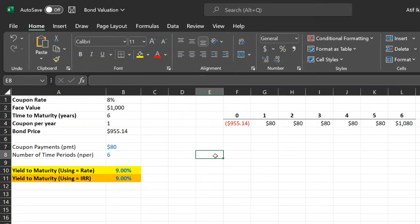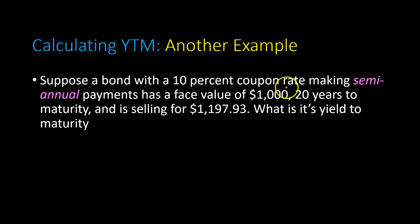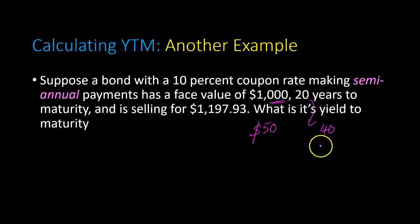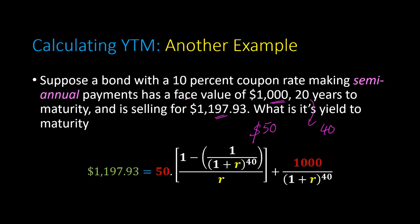Let's do this one more time for a bond that makes semi-annual coupon payments. Suppose a bond pays a 10% coupon rate semi-annually with a face value of $1,000 — meaning each six months you get $50. With 20 years to maturity, that means 40 six-month periods. The bond is selling for more than $1,000, meaning it's selling at a premium, so the yield to maturity will be less than 10%.